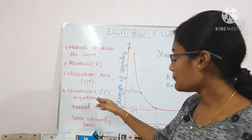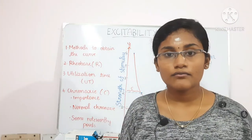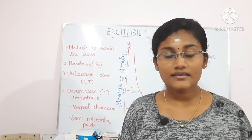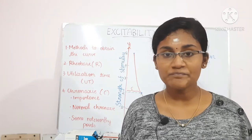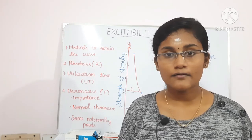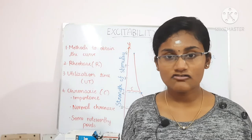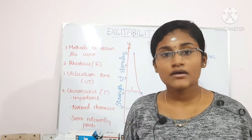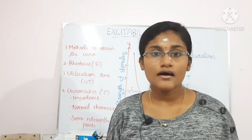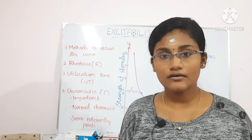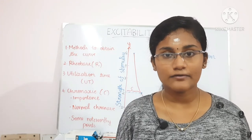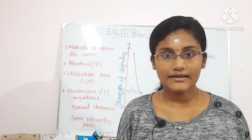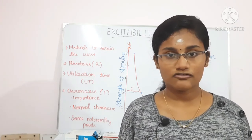Chronaxi determines the excitability of a tissue. Excitability means it is the response given by the tissue to irritation or stimulation, and it is a physical-chemical change. Higher the chronaxi, lower the excitability — so chronaxi and excitability are inversely proportional to each other.